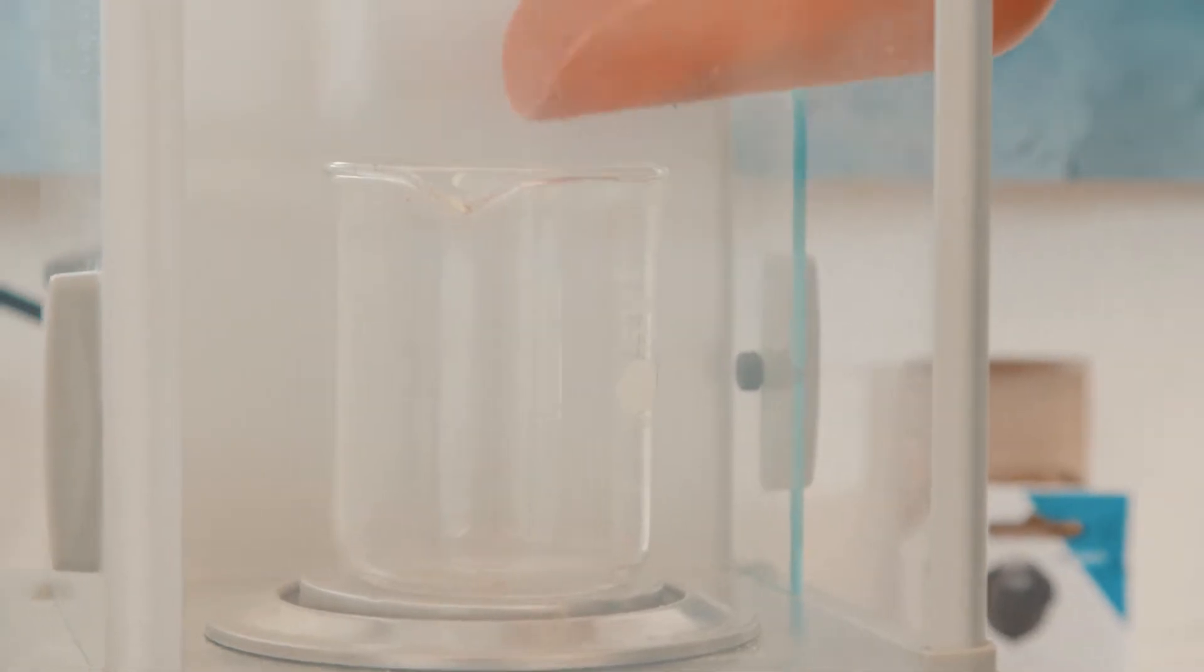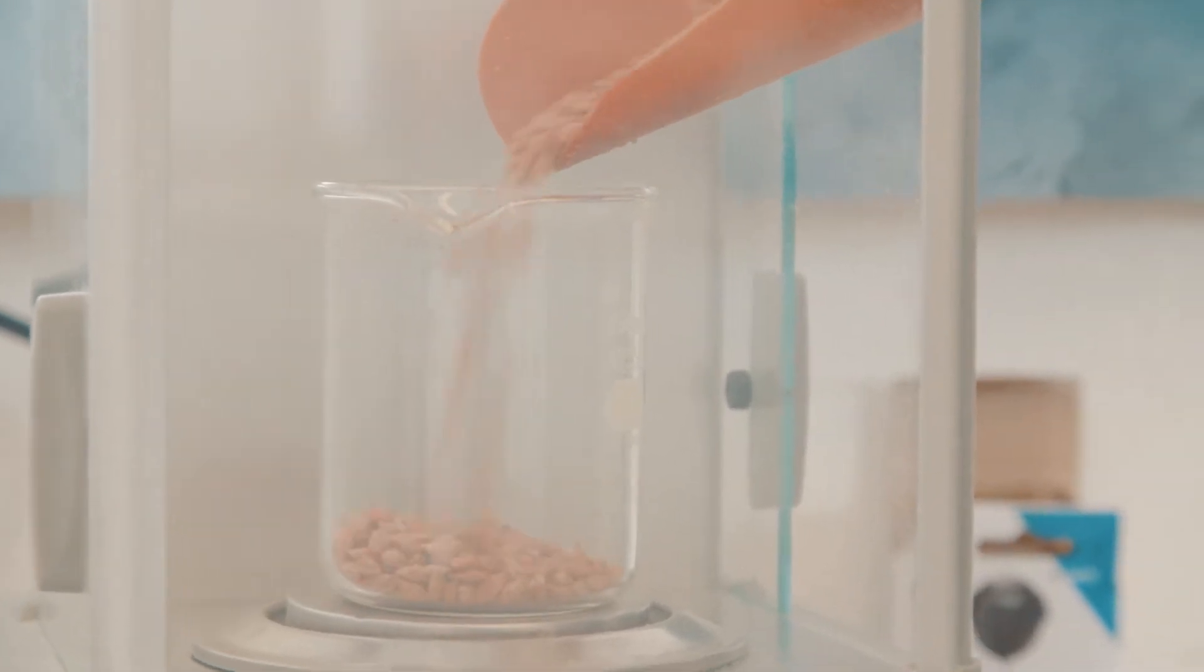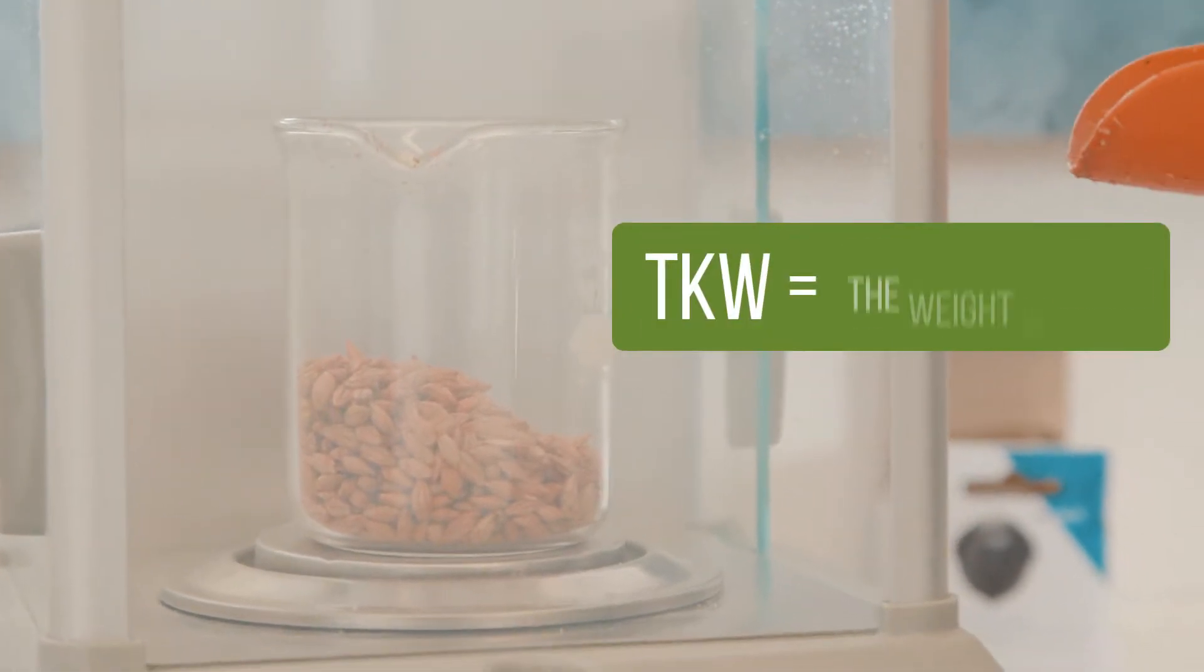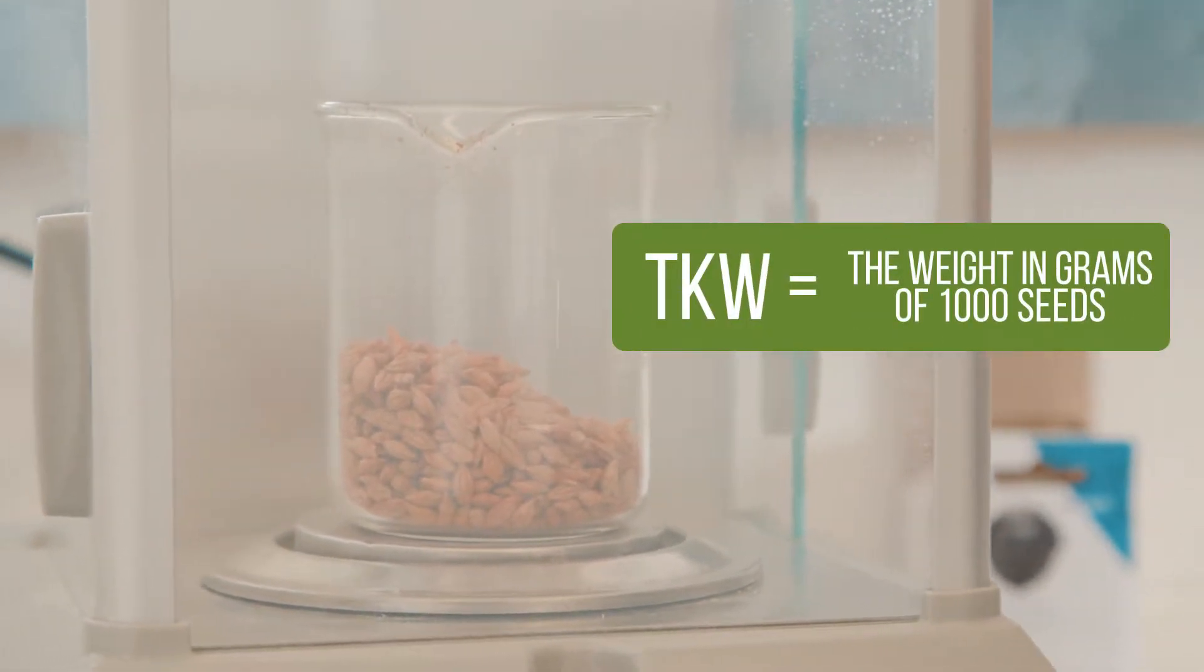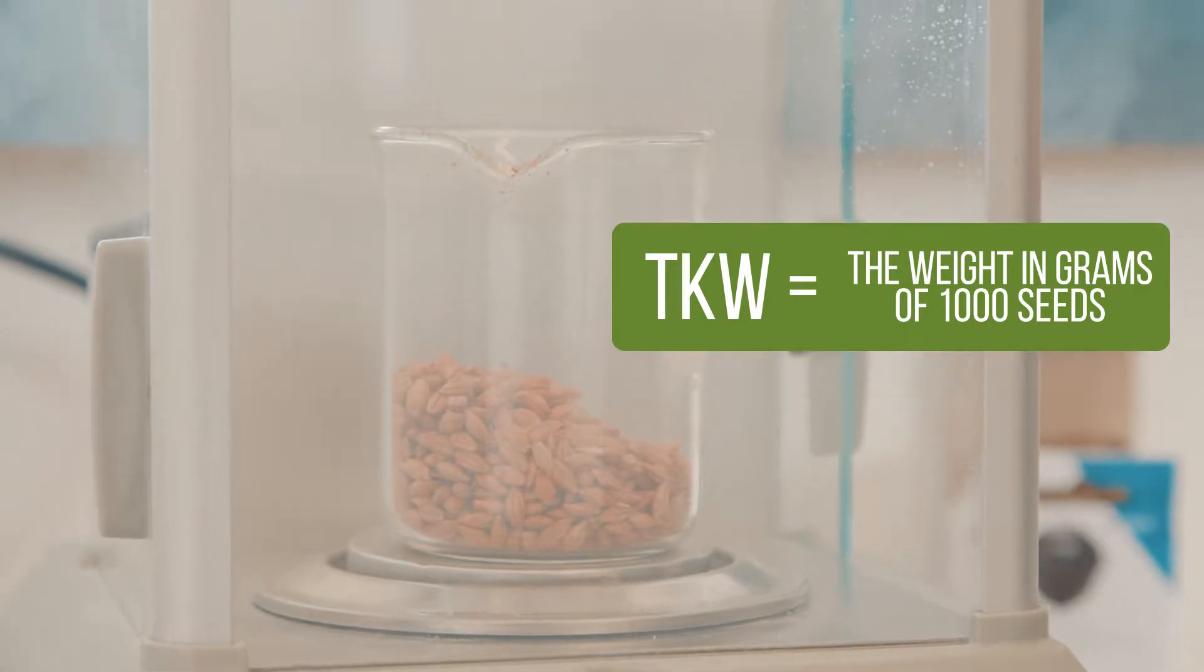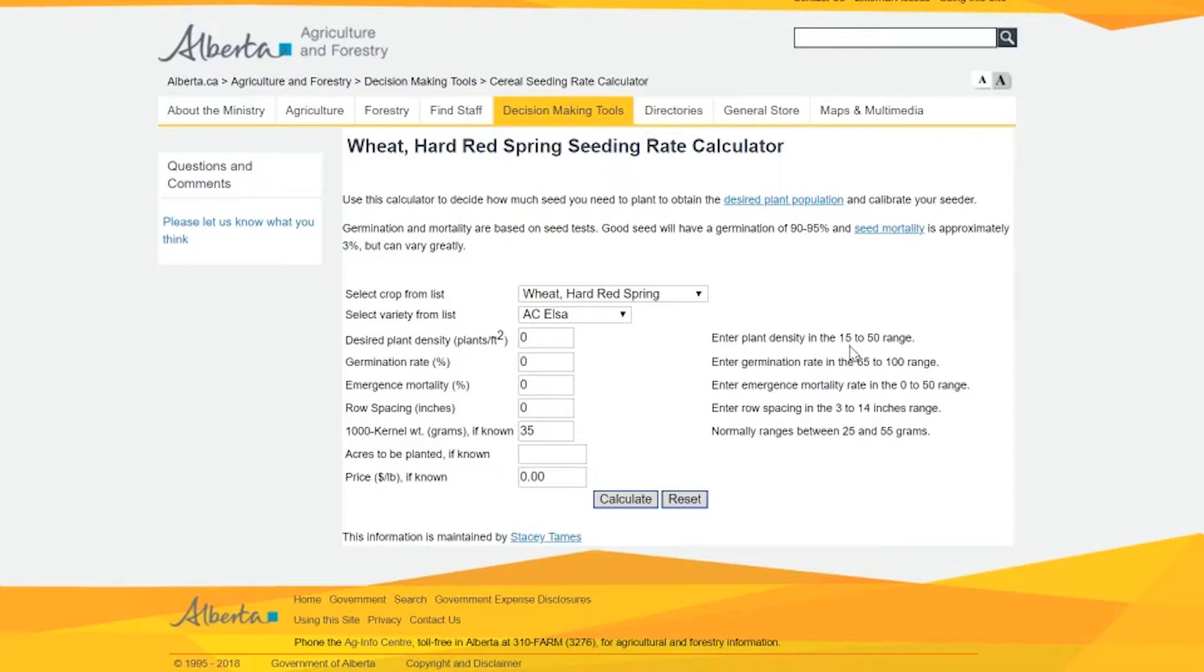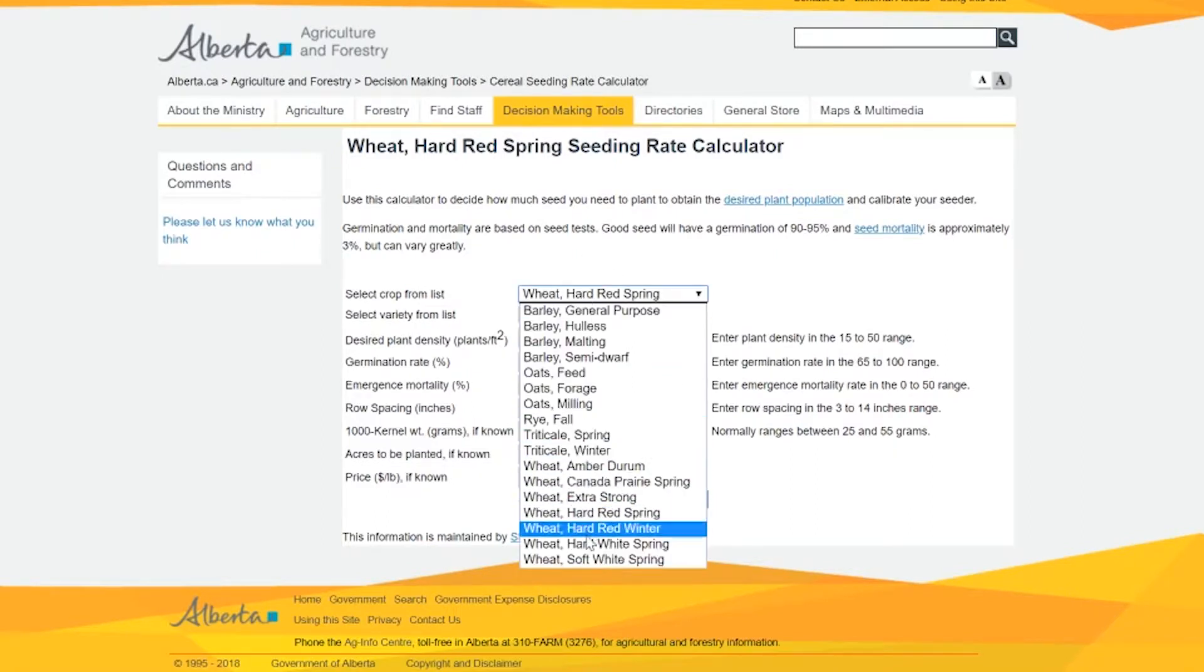The components of calculating a seeding rate are very simple. You usually get them both from where you buy your seed, and that's your percent germ and your 1,000 kernel weight. Take those two numbers home and use a calculator.